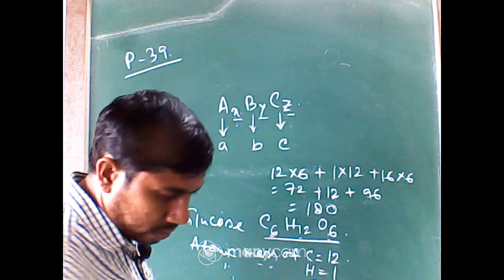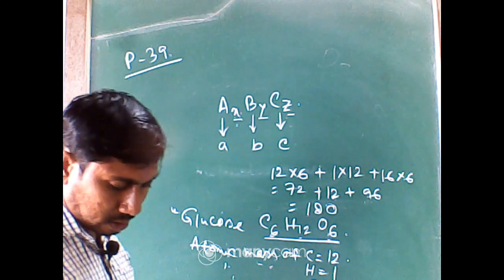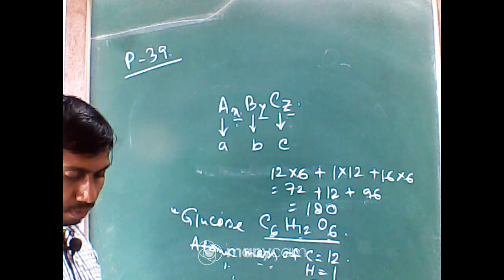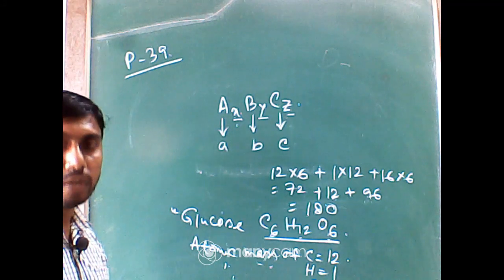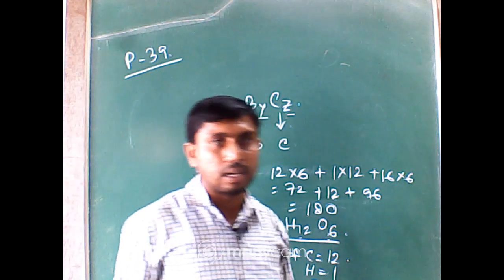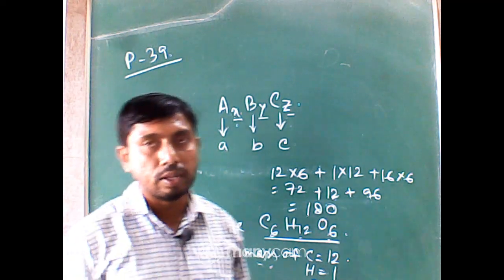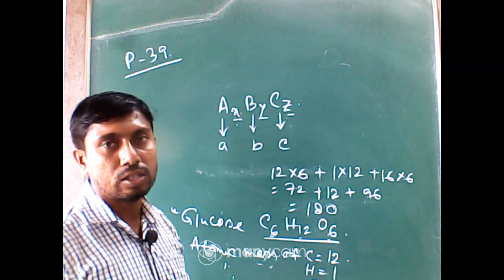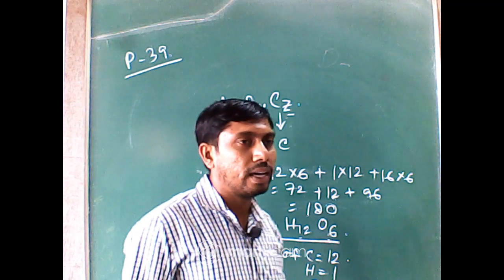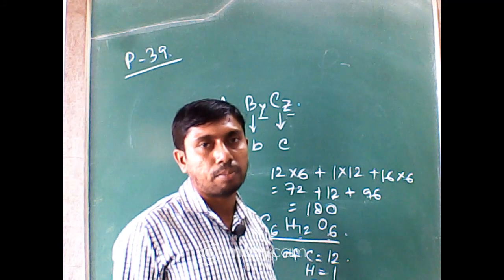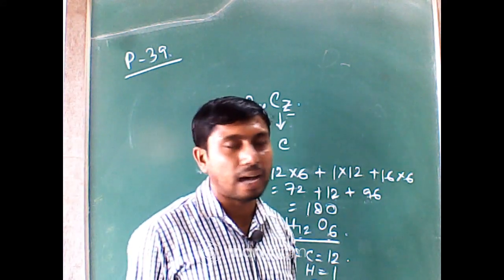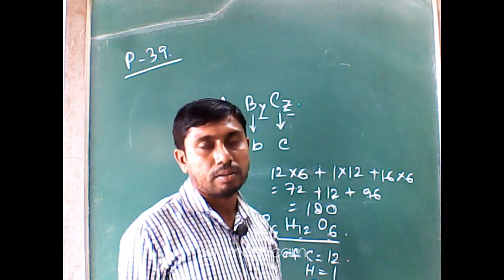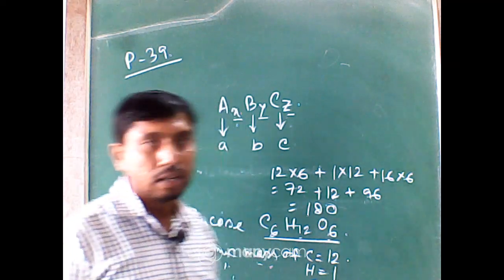Now the next unit is 3.5.2, which is formula unit mass. Formula unit mass is applicable for molecules that do not contain any hard bond — where there is no fixed bond length, for example in ionic solids, ionic crystals, or ionic compounds, where only electrostatic interaction is present. So when there is no static bond length, as in ionic compounds, we use the term formula unit mass instead of molecular mass.